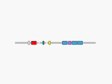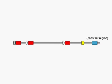In heavy chain genes, there are three gene segments: the variable, or V, segment; a diversity, or D, gene segment; and the joining, or J, segment. Light chain genes, such as those shown here, have only two gene segments: the V and the J segments.